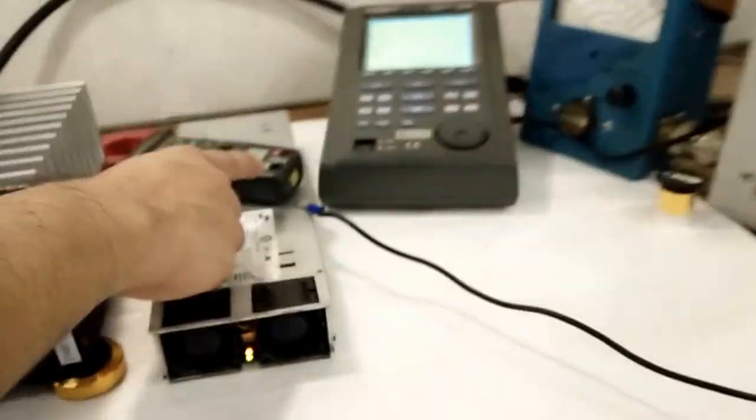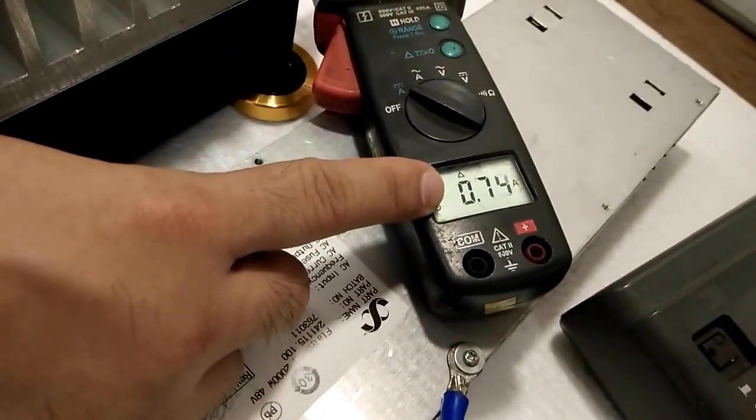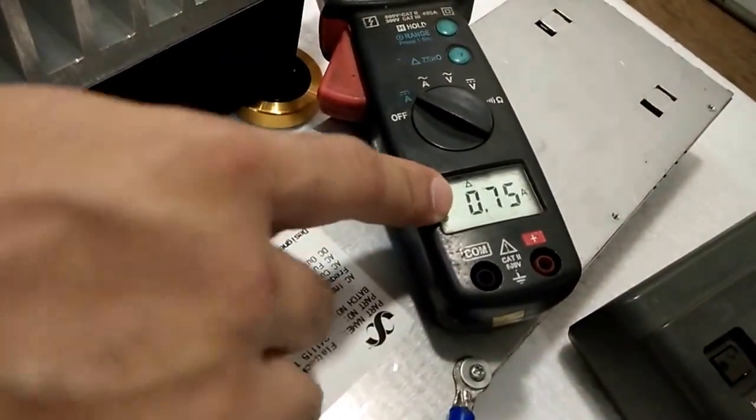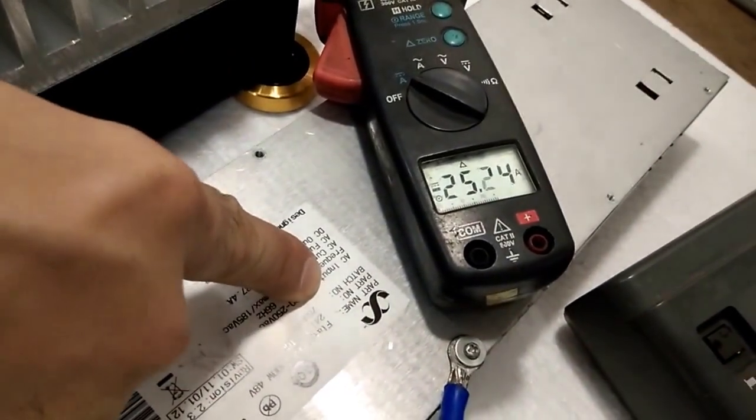And we are measuring the current. When it transmits 925 watts, it takes 25.5 amps.